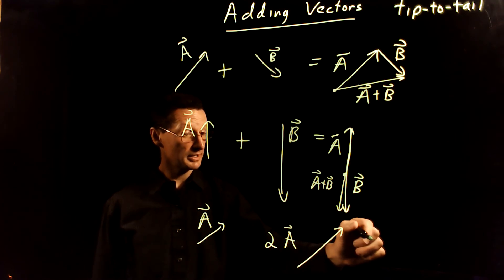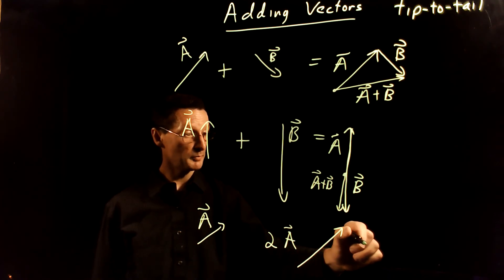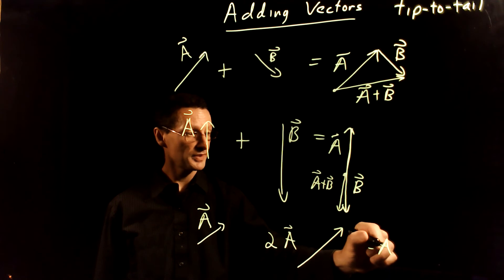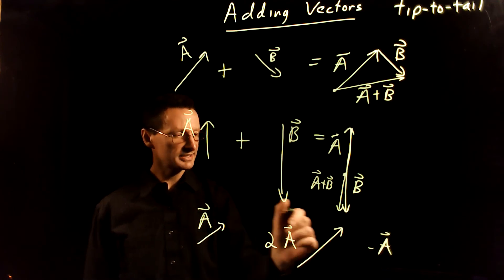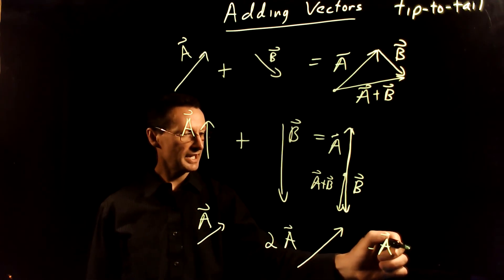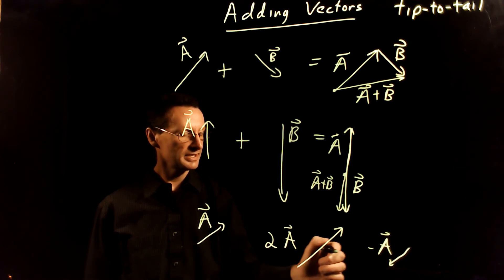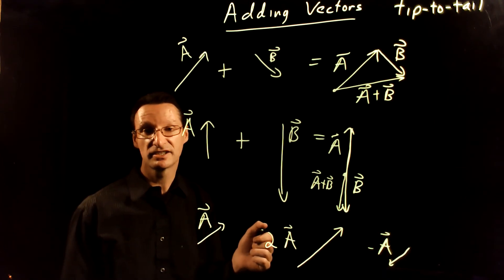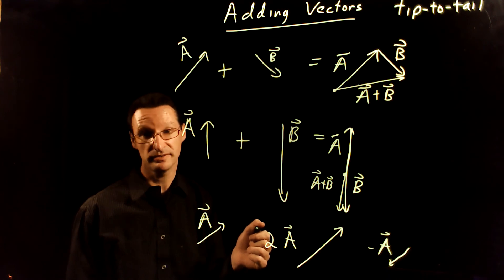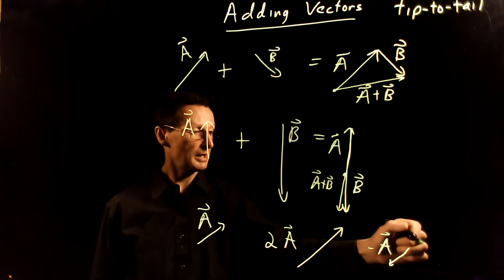I can also think about what happens if I multiply this by a negative number. So what does negative A look like? Well, it's the same length as A, but you just flip the direction completely around. So it's backwards from what it was. And you can do combinations of this, too.